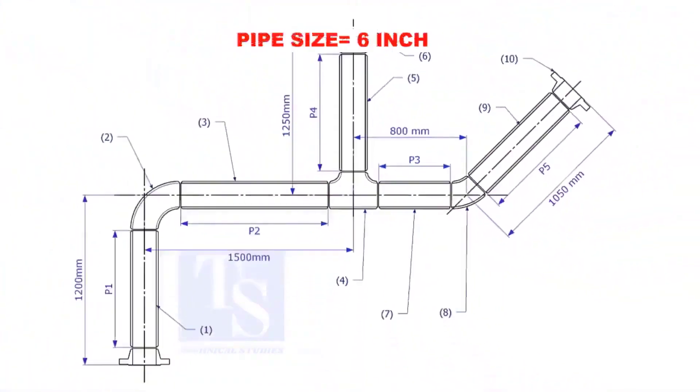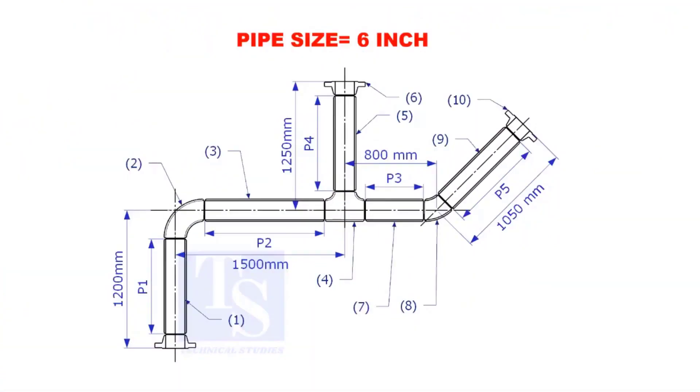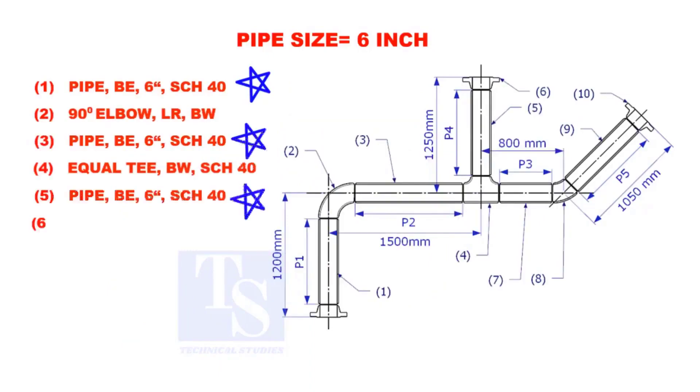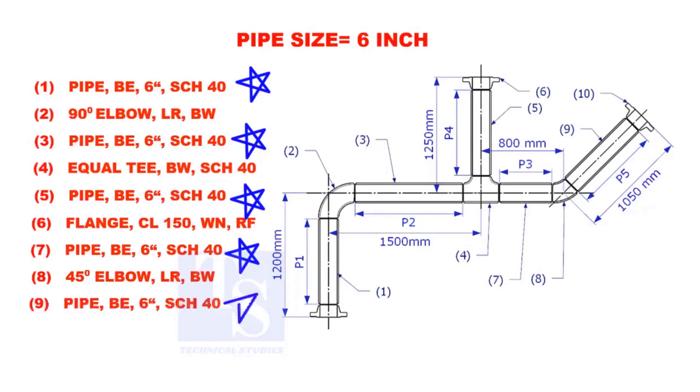Assume that the pipe size is 6 inches. Item numbers 1, 3, 5, 7, and 9 are pipes.